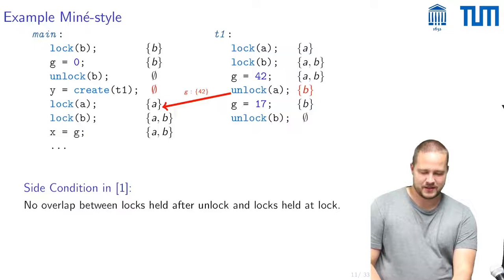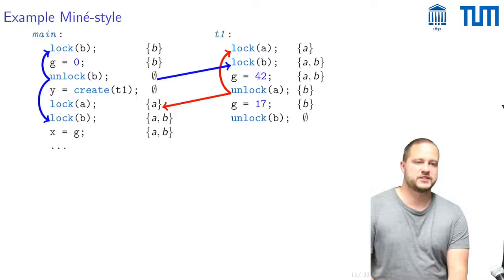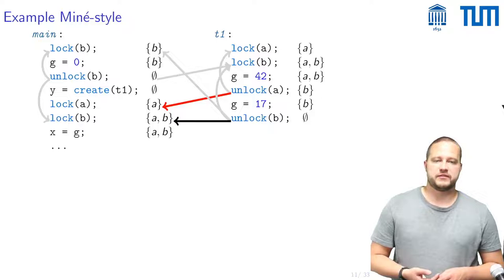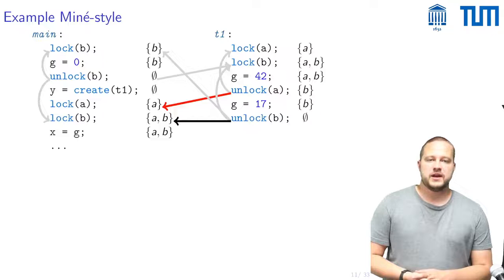So one can do this for all unlock and lock pairs and then one ends up with something that looks like this.